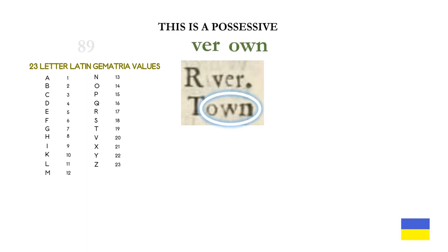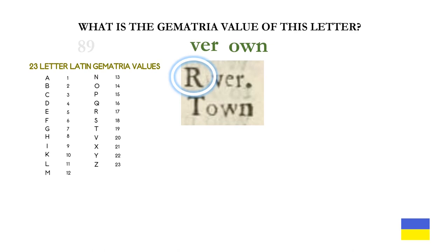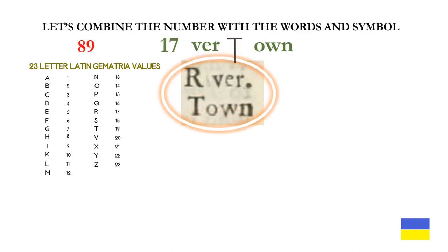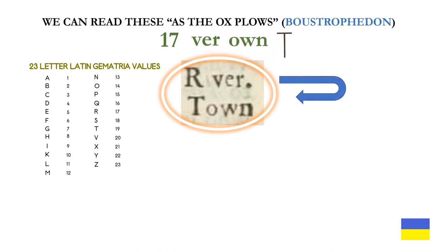The word 'own' is a possessive, and we have established that the uppercase T can be a Tau cross. The gematria value of this uppercase R is 17. Let's combine the number with the words and the symbol: 17, V-E-R, Tau cross, own. We can read these as the ox plows — the Greek technique of writing from right to left, or alternating — called Boustrophedon. Now we have 17, V-E-R, own, cross.